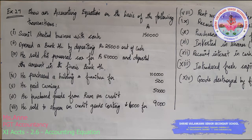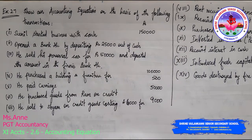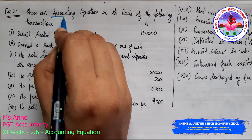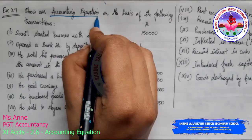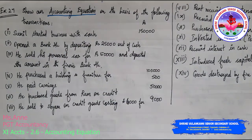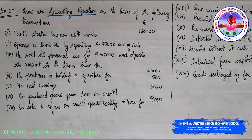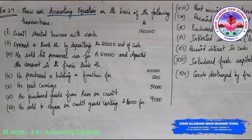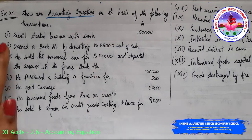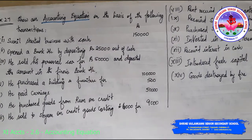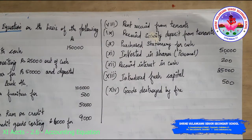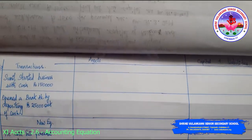Hello class, I welcome you all to this session. We are going to discuss the last problem in accounting equation — Exercise 27. Show an accounting equation on the basis of the following transactions. Sunil started business with cash 1 lakh 50,000. You can see there are about 14 transactions, so I have started to prepare the accounting equation format.